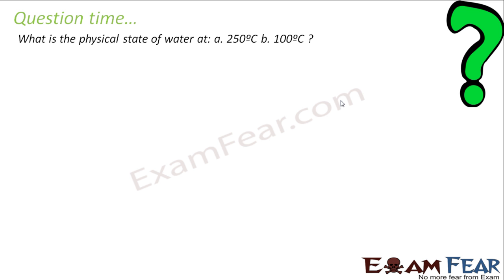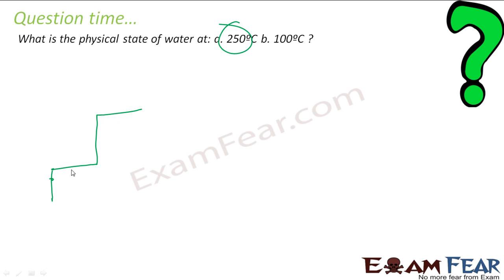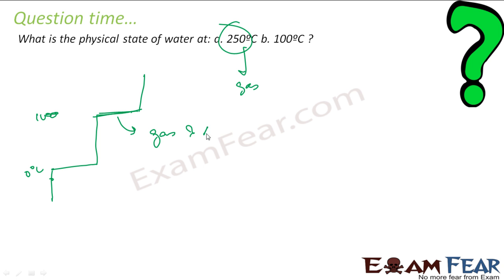Next question: what is the physical state of water at 25 degrees Celsius and 100 degrees Celsius? At 250 degrees Celsius, water is gas. From the graph, water is solid below 0°C, liquid between 0°C and 100°C, and gas above 100°C. At exactly 100 degrees Celsius, water exists in both gas and liquid states simultaneously.